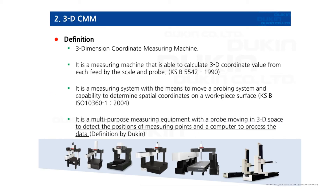Let's have a look at the definition of 3D CMM. CMM is short for Coordinate Measuring Machine. There are many ways to define what CMM is. It is a multipurpose measuring equipment with a probe moving in 3D space to detect the positions of measuring points, and a computer to process the data. All these definitions mention a probe or probing system, so we can assume the probe is a very important component for CMM.